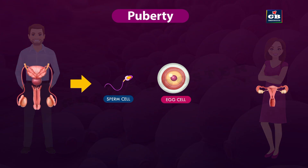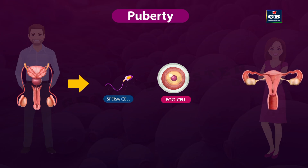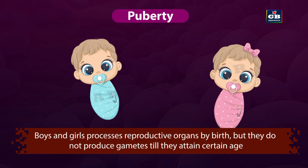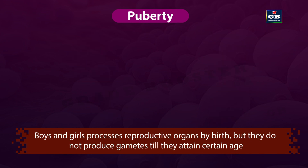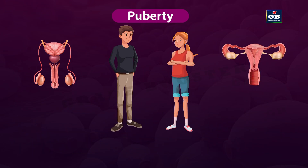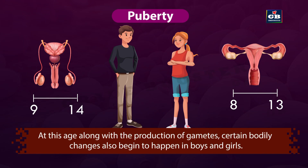Male reproductive organs produce male gametes and female reproductive organs produce female gametes. Boys and girls possess reproductive organs by birth, but they do not produce gametes till they attain a certain age. The maturation of special tissues present in the reproductive organs takes place between 8 to 13 years of age in girls and 9 to 14 years of age in boys. At this age, along with the production of gametes, certain bodily changes also begin to happen in boys and girls. This is called the beginning of puberty.